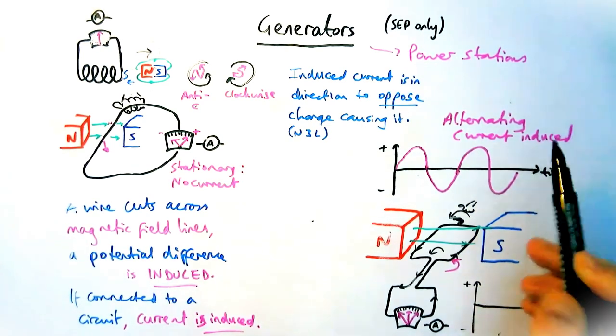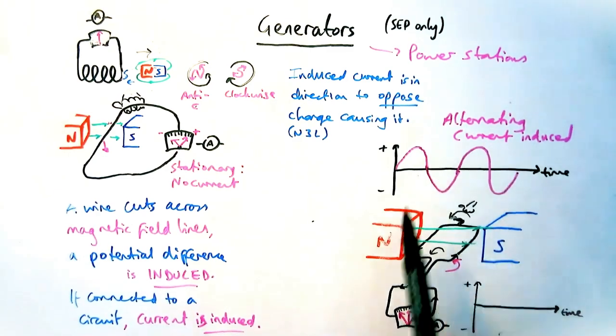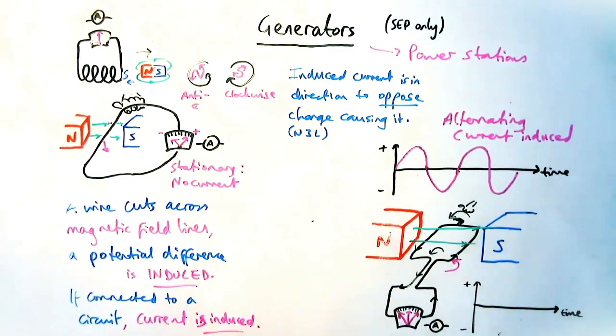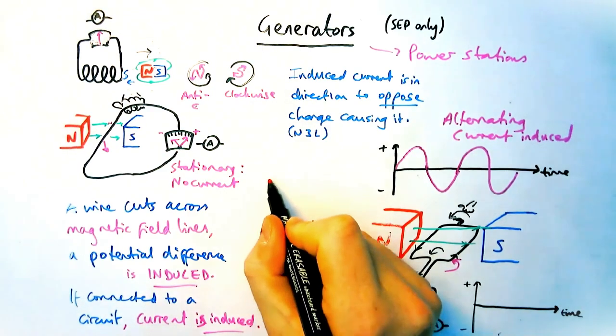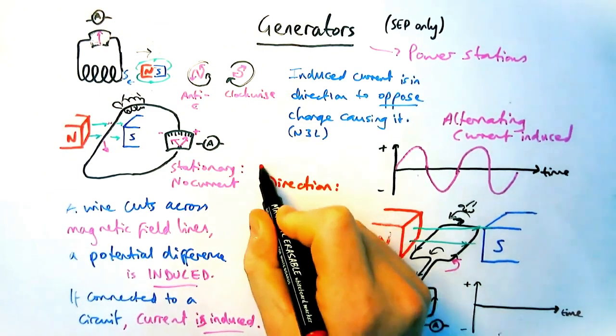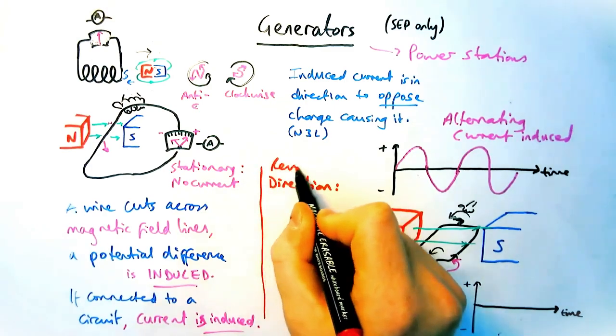Now, so as summary then, to reverse the direction on the potential difference or the current-induced, I can either reverse the movement, so it's going in an opposite direction, or I can reverse the magnetic field, so I could switch over the north and the south pole.